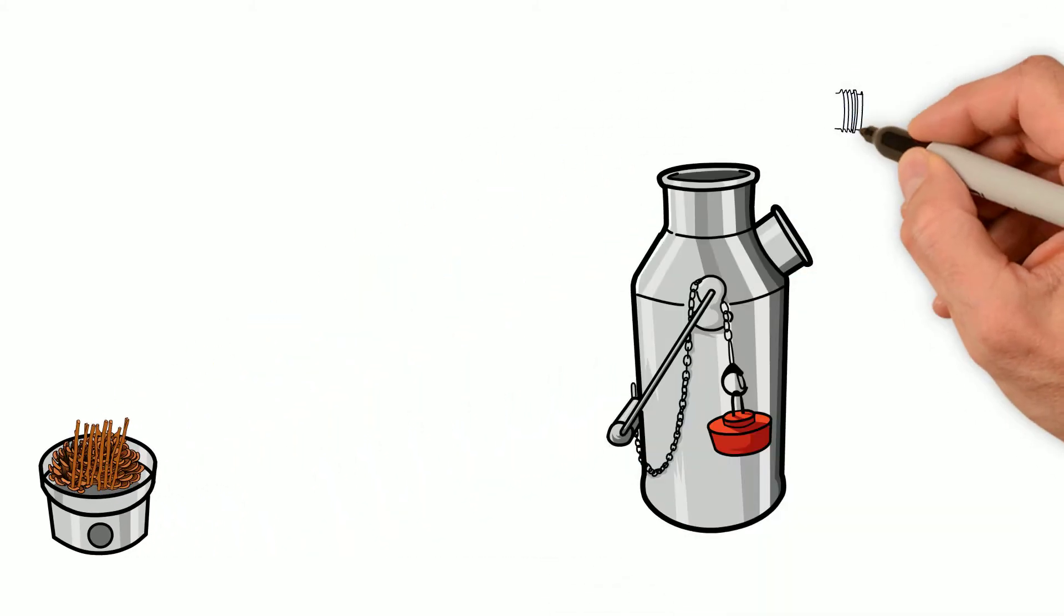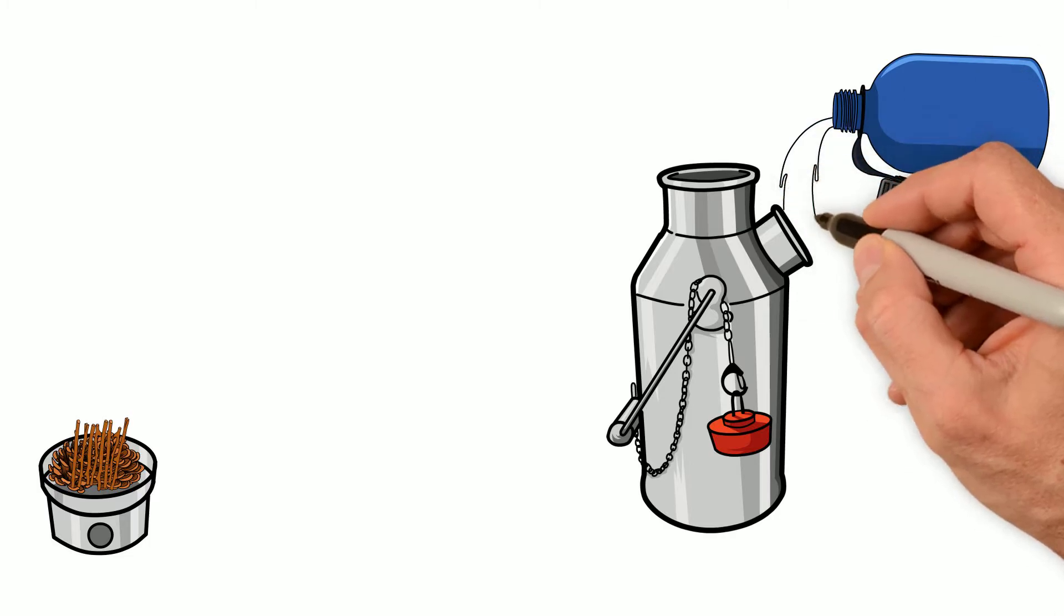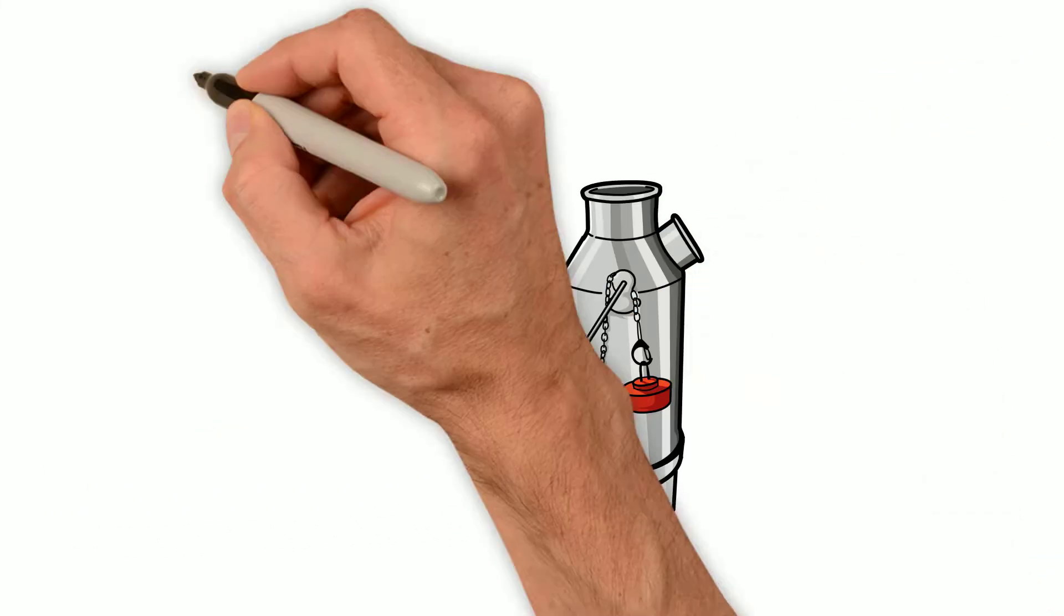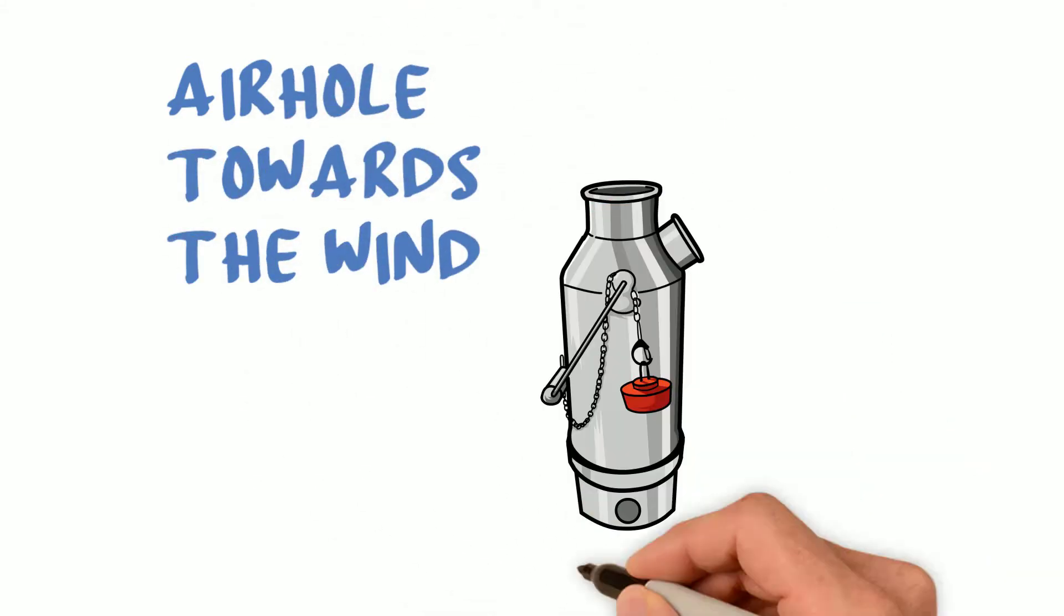Rick placed the pine cones and twigs in the fire base then took the kettle and poured water into the kettle's spout. Next, he set the kettle full of water on the fire base, pointed the air hole to the wind and lit the kindling.